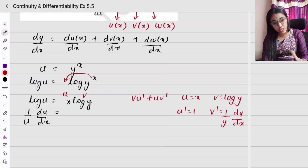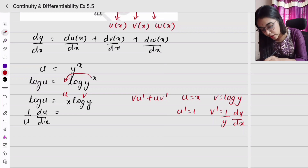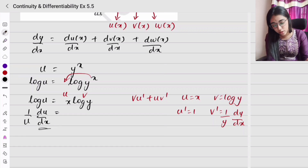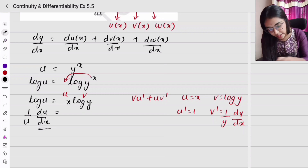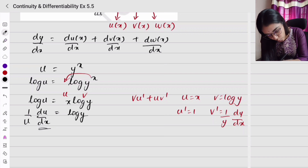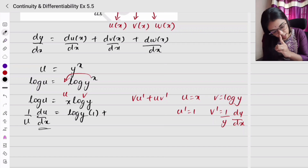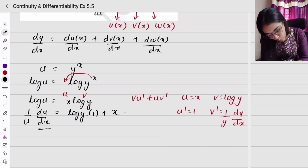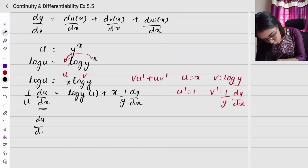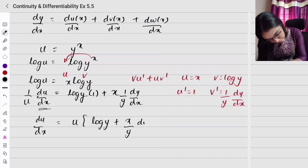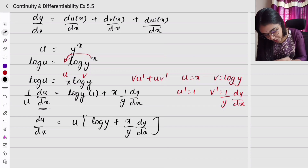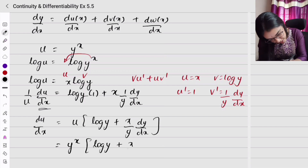Remember, the variable of differentiation is x, so wherever another variable appears you must write the dy/dx term separately. Applying v·u' + u·v': (1/u)(du/dx) = log y · 1 + x · (1/y)(dy/dx). Therefore du/dx = u times [log y + (x/y)(dy/dx)] = y^x · [log y + (x/y)(dy/dx)].